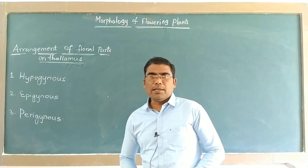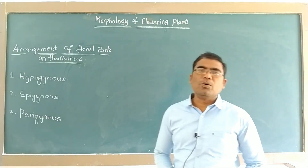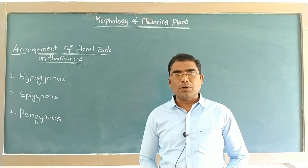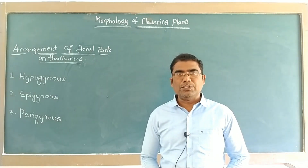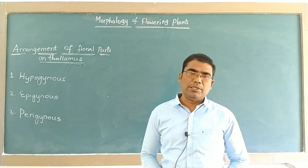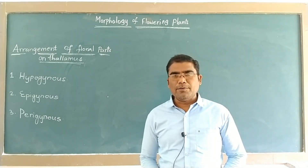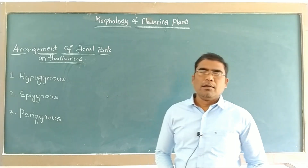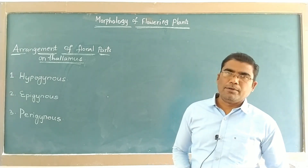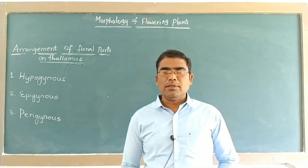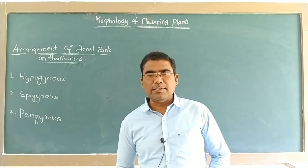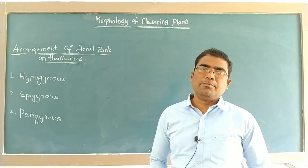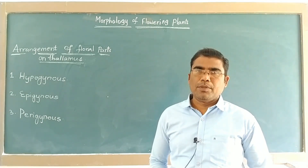We know that a flower comprises four different types of floral parts: calyx, corolla, androecium, and gynoecium. Calyx is made up of sepals, corolla is made up of petals, androecium is represented by the stamens, and gynoecium comprises the carpels.